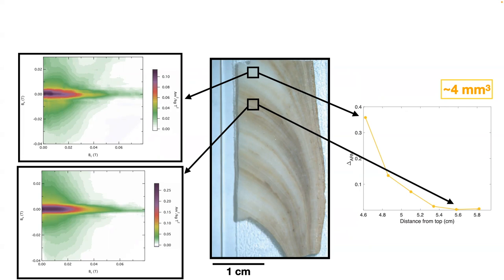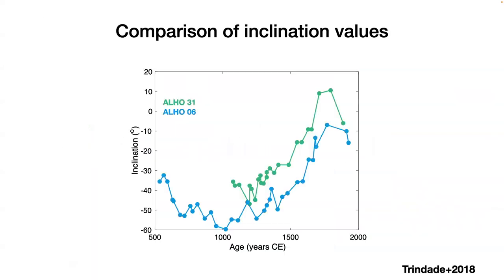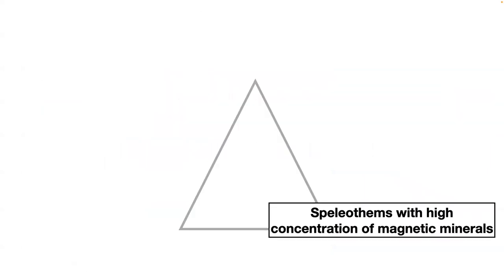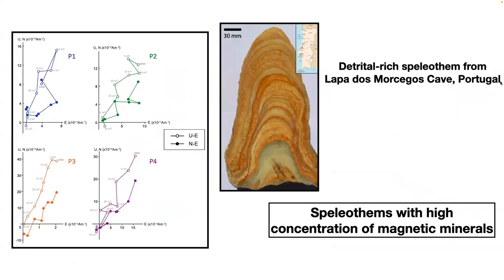A comment that the field during excursions could be an order of magnitude weaker, potentially making measurement harder. The speaker acknowledges this is a major challenge — the weaker the field, the harder it is to retrieve. However, the Portuguese speleothem (Lapa dos Morcegos) is exciting because even with weaker ARMs, robust records can be obtained. The challenge with that speleothem is dating due to detrital thorium. For Paudalio, if it recorded an excursion, it would likely be impossible to measure — similar to the Crevice Cave result.